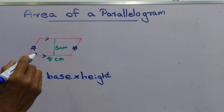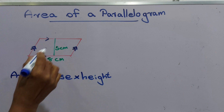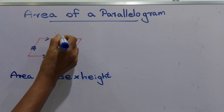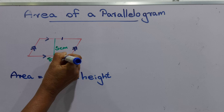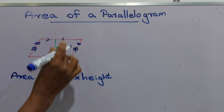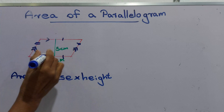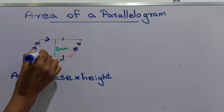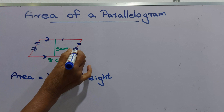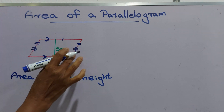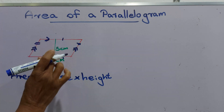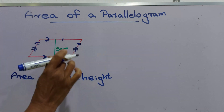A parallelogram means opposite sides are equal and parallel. This side is equal to this side, and this side is equal to this side. This side is parallel to this side, and this side is parallel to this side.